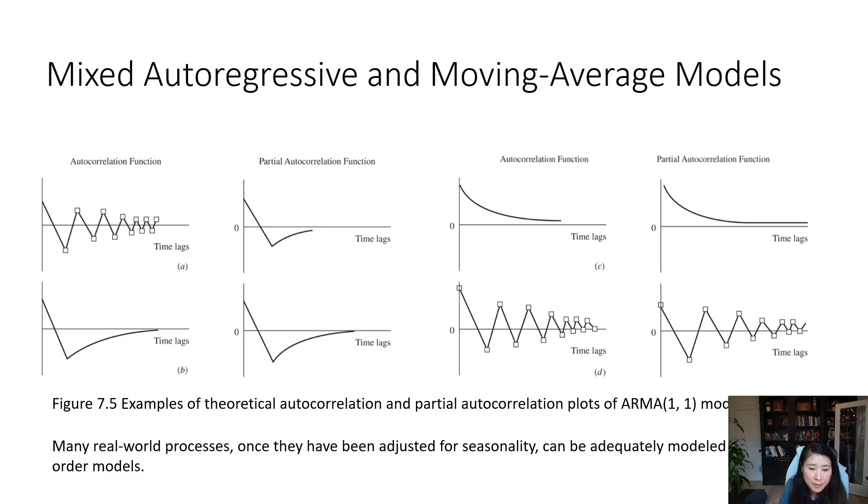First, look at diagram A. In the ACF there is no spike, they just alternate and slowly die down. But in the partial autocorrelation function, PACF, we see one spike. Therefore, for the first diagram it will be more proper to use an AR1 model.